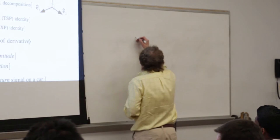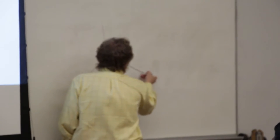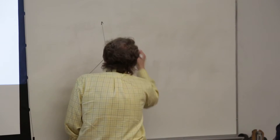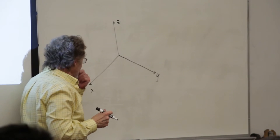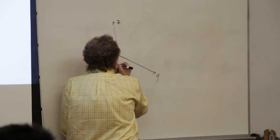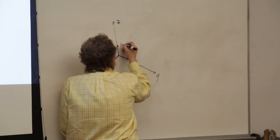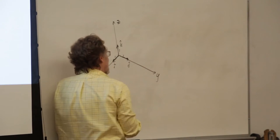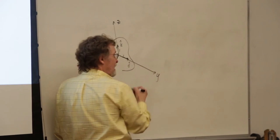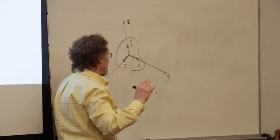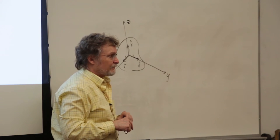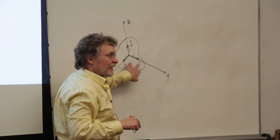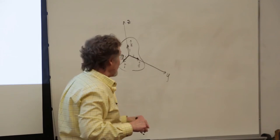The right-handed ortho-normal triad you're most familiar with is the Cartesian system. In your dynamics classes, you probably used Cartesian analysis almost exclusively. A Cartesian coordinate system has three little unit vectors associated with it: i-hat, j-hat, and k-hat — three mutually perpendicular unit vectors respectively parallel to the underlying Cartesian coordinate axes. That's the most common example of a right-handed ortho-normal triad.